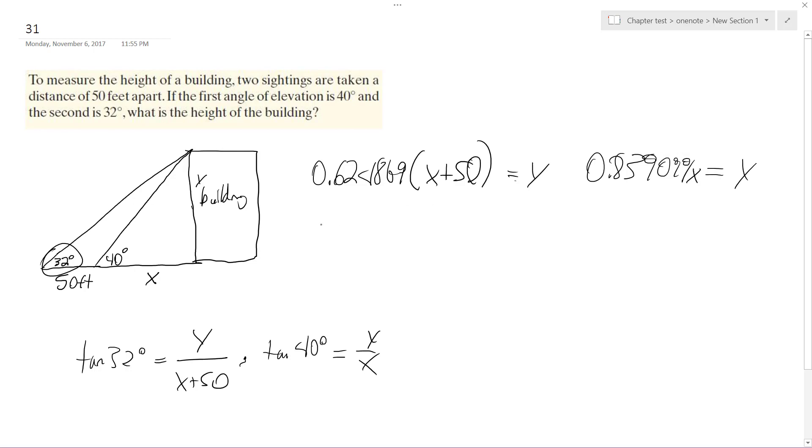So distribute this so I end up with like 31.243 plus 0.625x. I know I'm being a little inconsistent with my significant digits, but it should be fine. And then I have this for x. So y equals to both of these, because y equals both of these, oh sorry, this should be x.